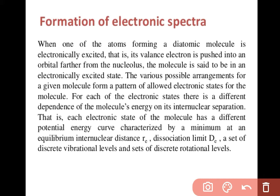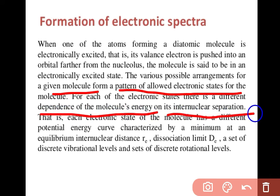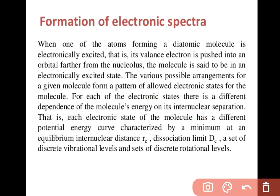Formation of electronic spectra: When one of the atoms forming a diatomic molecule is electronically excited — that is, the valence electron is pushed up into an orbital further from the nucleus — the molecule is said to be in an electronically excited state. The various possible arrangements for a given molecule form a pattern of allowed electronic states of the molecule. For each electronic state, there is a different dependence of the molecular energy on its internuclear separation. Each electronic state of a molecule has a different potential energy curve characterized by a minimum at an equilibrium internuclear distance.